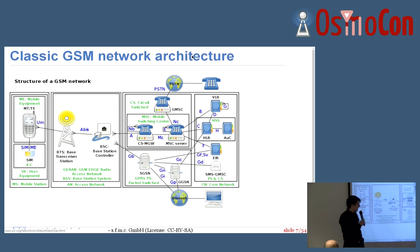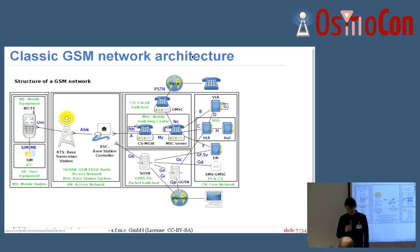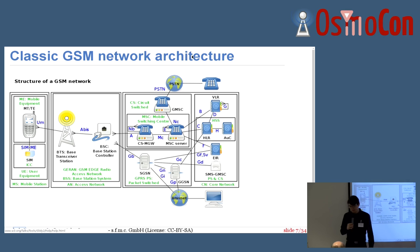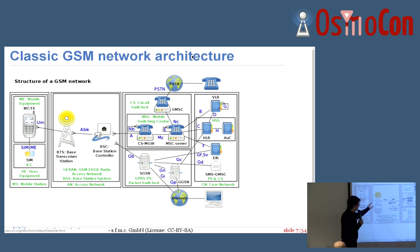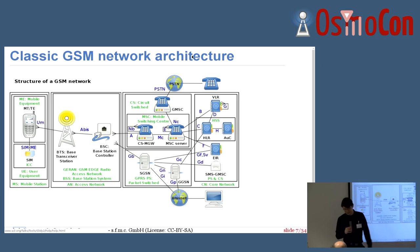Let's look at classic GSM architecture. What's important to understand if you have no exposure to this before is that there's not one protocol stack, but a separate protocol stack on each of the interfaces between two elements. The protocol stack on the radio interface on UM is a completely different protocol stack than on the A-bis interface or the A-interface or other interfaces. Every interface you start to look at - maybe some upper layers are identical, but the lower layers are definitely each time separate and different.